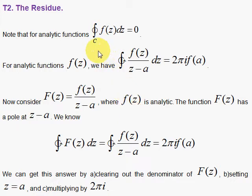For example, we already know that the closed path integral of an analytic function is equal to zero. The path comes back to the starting point. For analytic functions divided by z minus a, when you do this closed path integral, you get 2πi f(a).